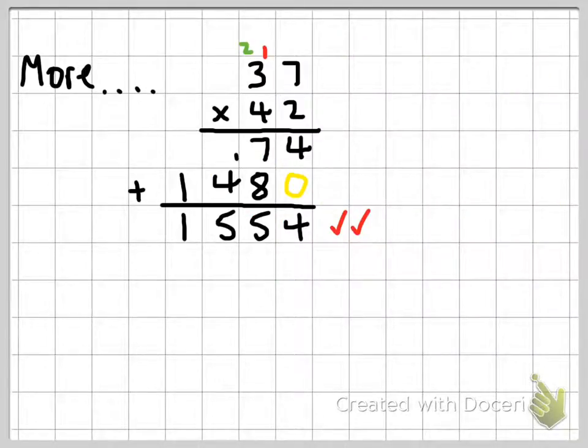Here's another example. Now we've got 37 times 42, so let's work together. I'm going to start with number two. Two sevens are 14, put down the four, carry the one. Two threes are six, and that's seven.